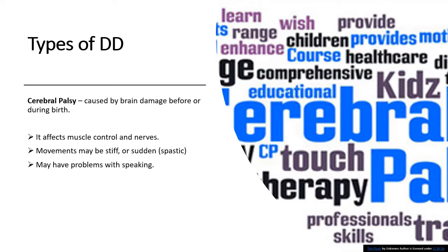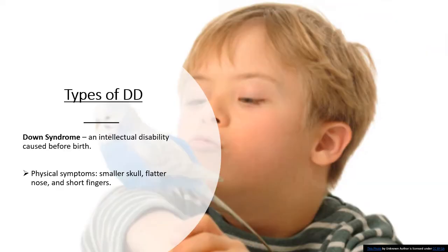Cerebral palsy is caused by brain damage before or during birth. It affects muscle control and nerves, and movements may be stiff or sudden. The person may also have problems with speaking. Down syndrome is an intellectual disability caused before birth. Physical symptoms include a smaller skull, flatter nose, and short fingers.